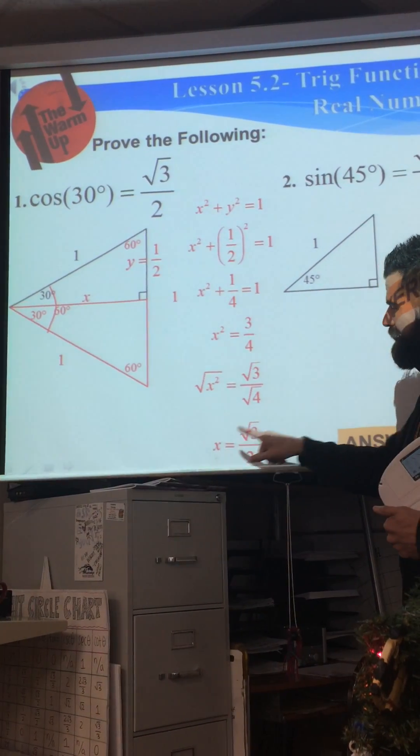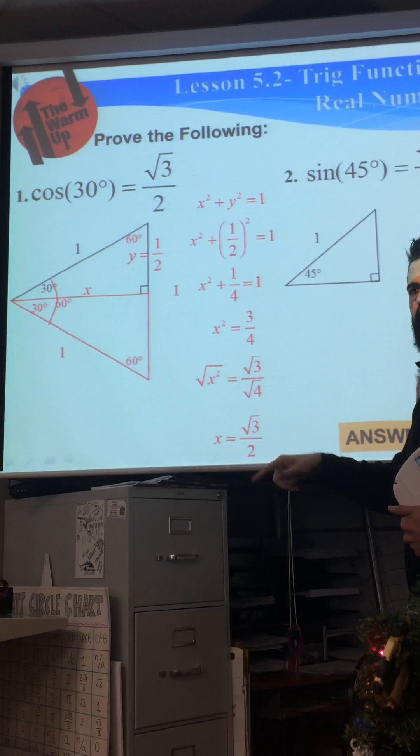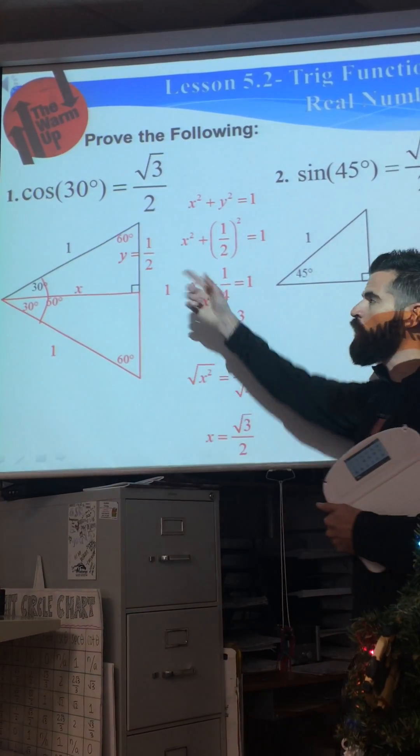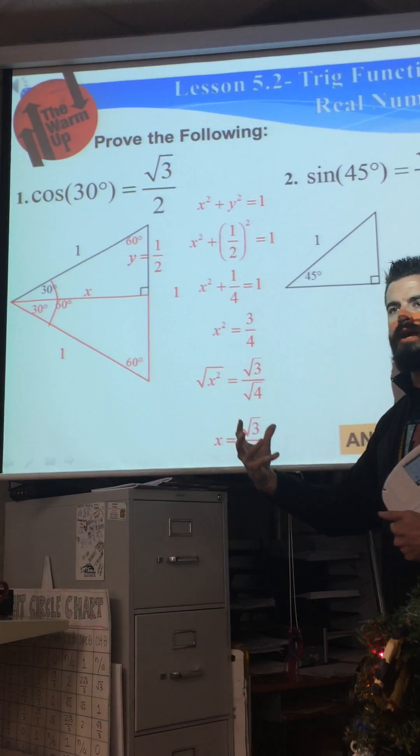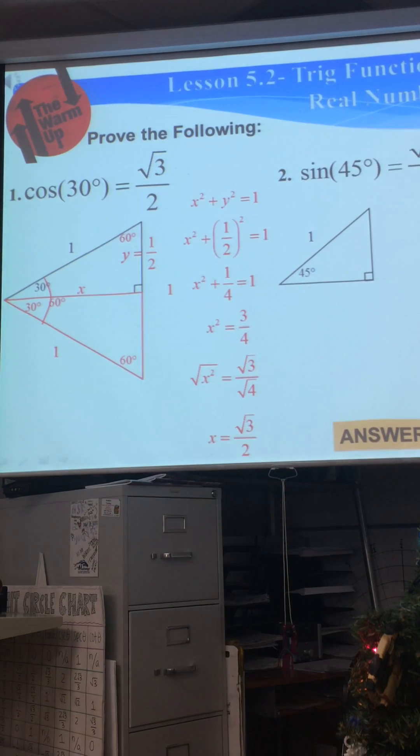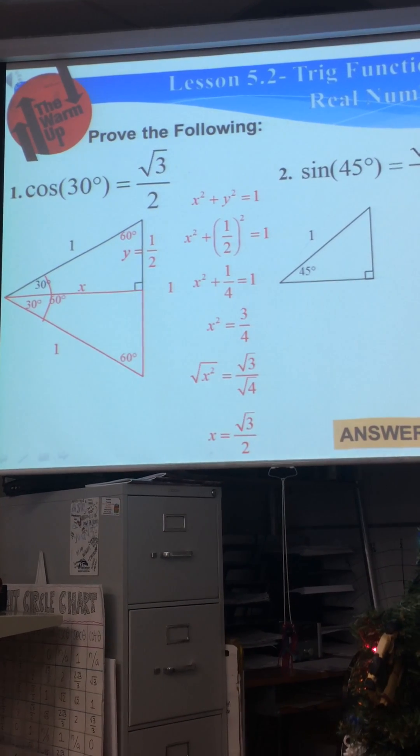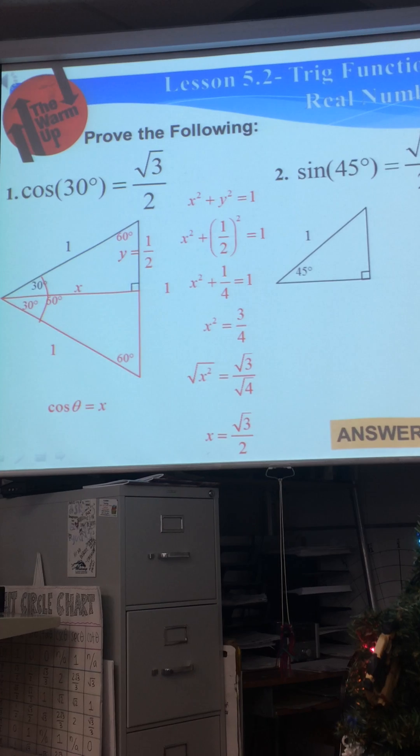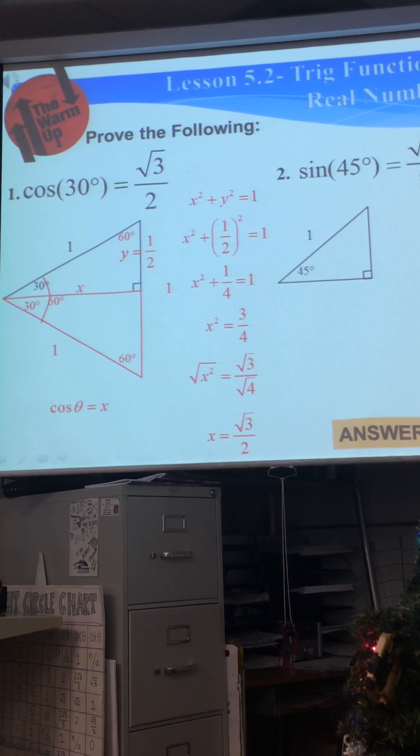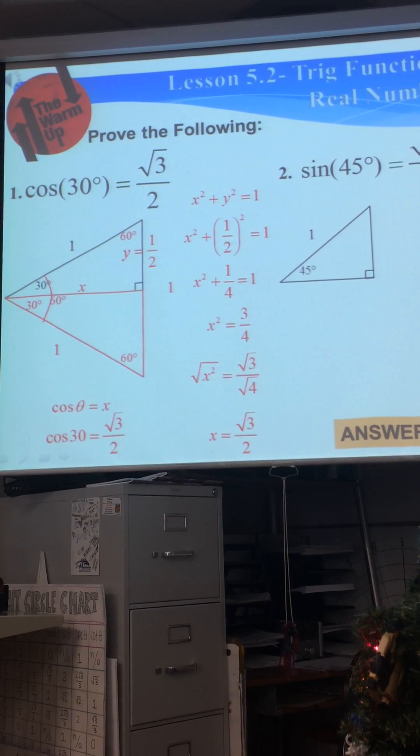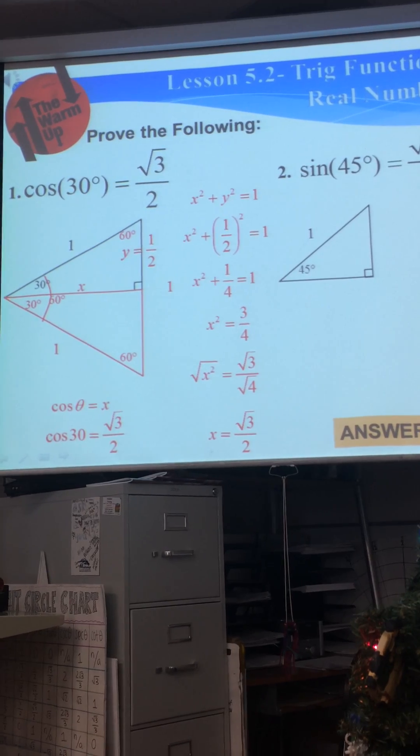Listen, x equals radical 3 over 2, and we know that x and cosine are related, right? Cosine of the angle is equal to the x of the angle. So cosine equals x, thus cosine of 30 degrees has to be radical 3 over 2.